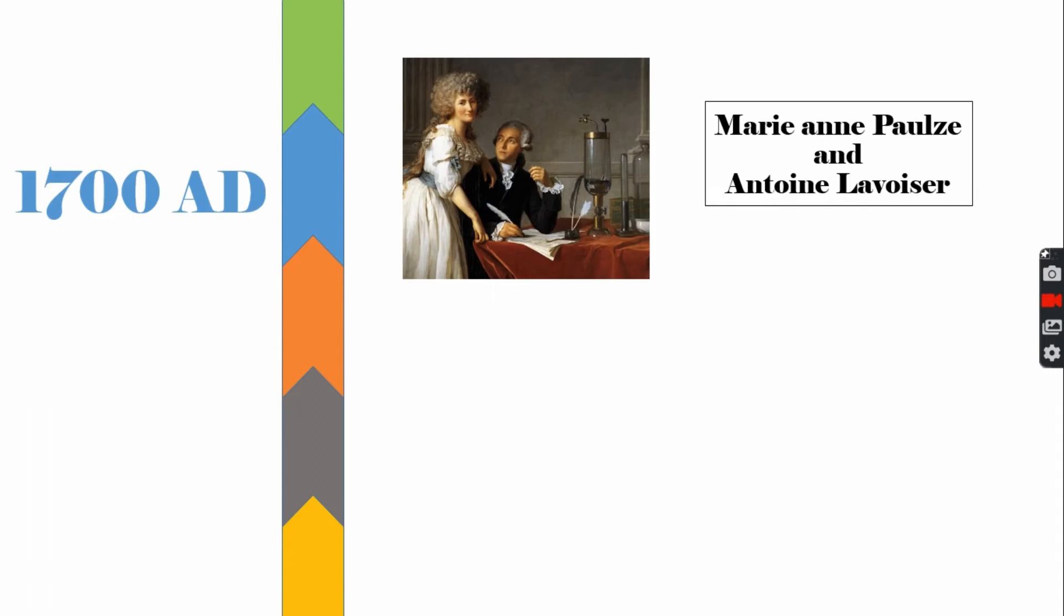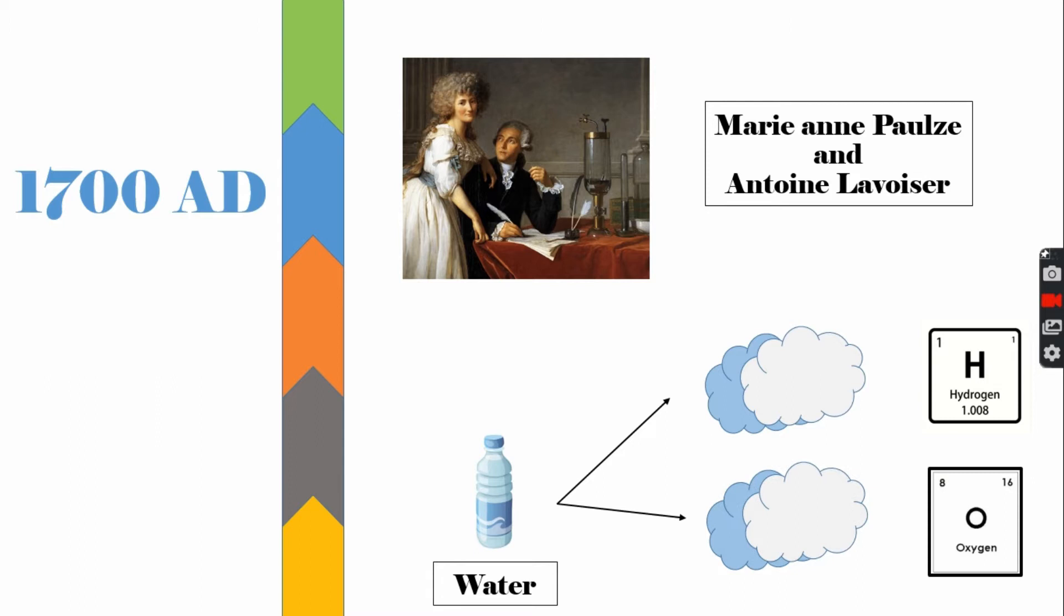Later on, in 700 AD, Jabir Ibn Hayyan took extraction to another level. He found that fruits end up with a very pure substance compared to what is found in nature. Hundreds of years later, Lavoisier and her husband built on his work. They found that even pure substances can be broken down into smaller pieces through chemical reaction, such as water into hydrogen and oxygen. They called this element.